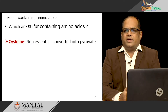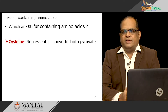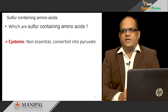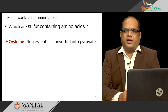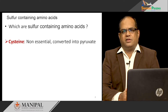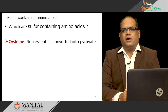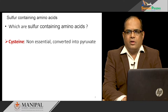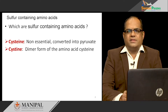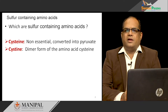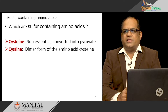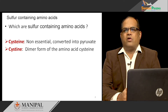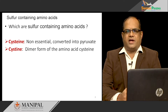Cysteine is a non-essential amino acid because you can synthesize it in your body, and this cysteine can be converted into pyruvate. Cystine is nothing but a dimer of cysteine — two cysteines are joined together to form cystine.